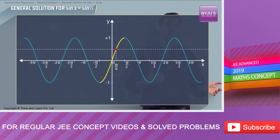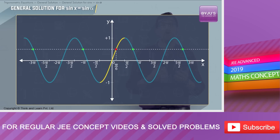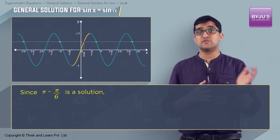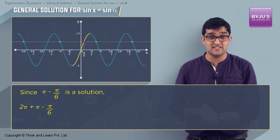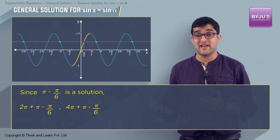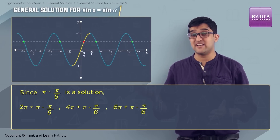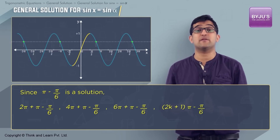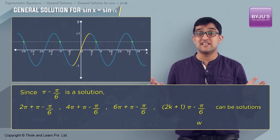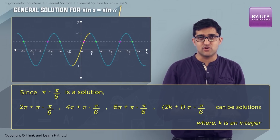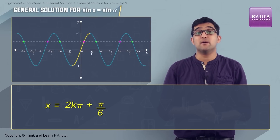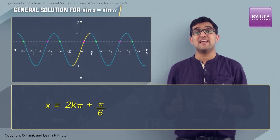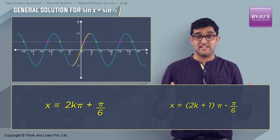Since π/6 is a solution, π - π/6 is also a solution. You know that sin θ = sin(π - θ). Since π - π/6 is a solution, then 2π + (π - π/6), 4π + (π - π/6), 6π + (π - π/6), and every (2k+1)π - π/6 is a solution. So all the solutions of sin x = 0.5 are x = 2kπ + π/6 and x = (2k+1)π - π/6.